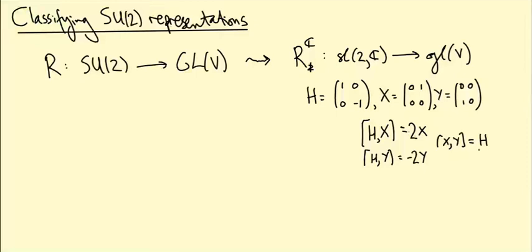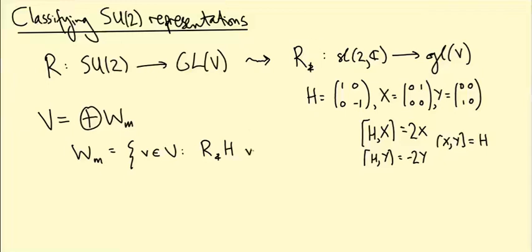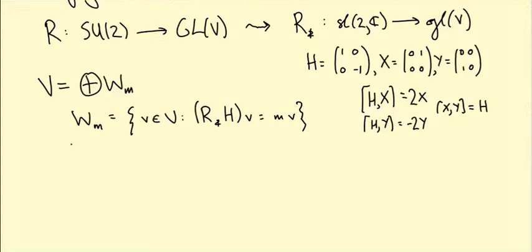And we've been trying to analyze the representation R star complexified. So V splits as a direct sum of weight spaces, where W_M is the eigenspace of R star H with eigenvalue M. And we've shown that R star X sends W_M to W_{M+2}, increases the weight by 2, and R star Y decreases the weight by 2.